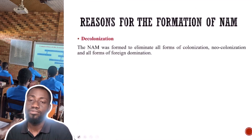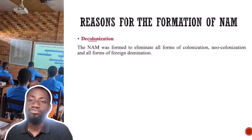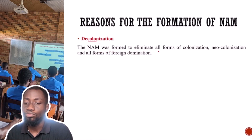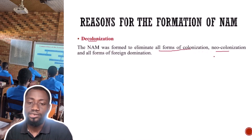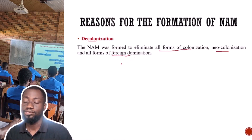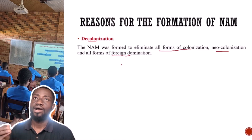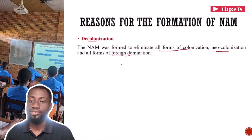Now let's take a look at why the NAM was formed — the reasons for the formation of the NAM. The first reason was decolonization. The NAM was formed in order to eliminate all forms of colonization, neo-colonization, and foreign domination. They didn't want their countries to be dominated by foreigners, and they also sought to aid other countries under colonial rule to be liberated.